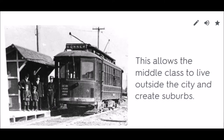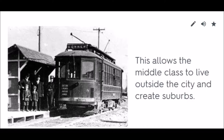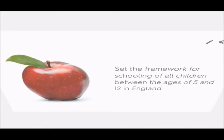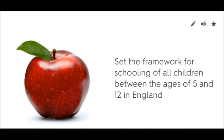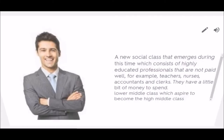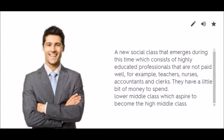Public Education Act 1870: Set the framework for schooling of all children between the ages of 5 and 12 in England. A new social class emerges during this time consisting of highly educated professionals who are not paid well — for example, teachers, nurses, accountants, and clerks. They have a little bit of money to spend. This lower middle class aspires to become the high middle class.